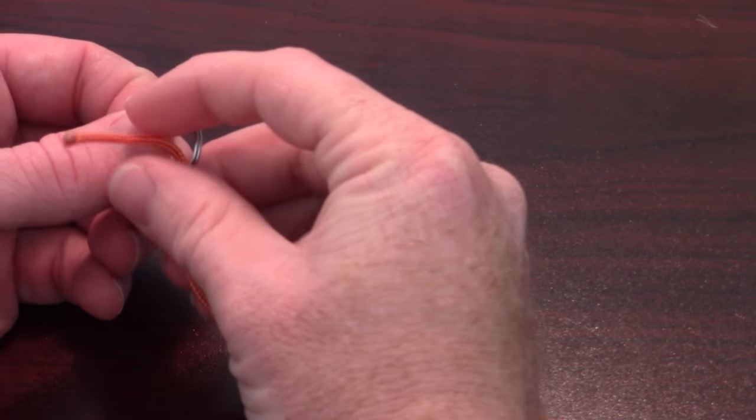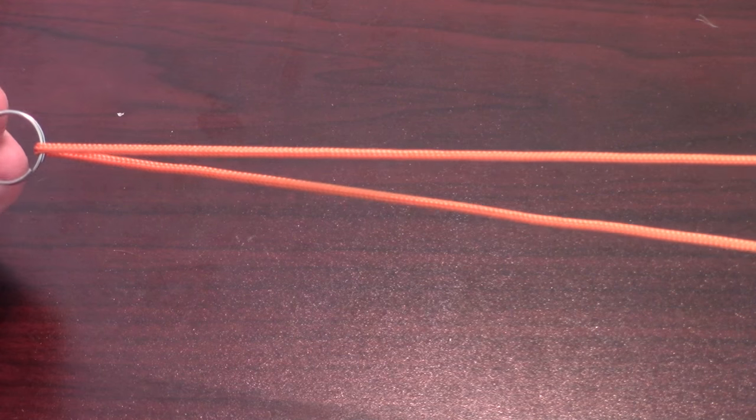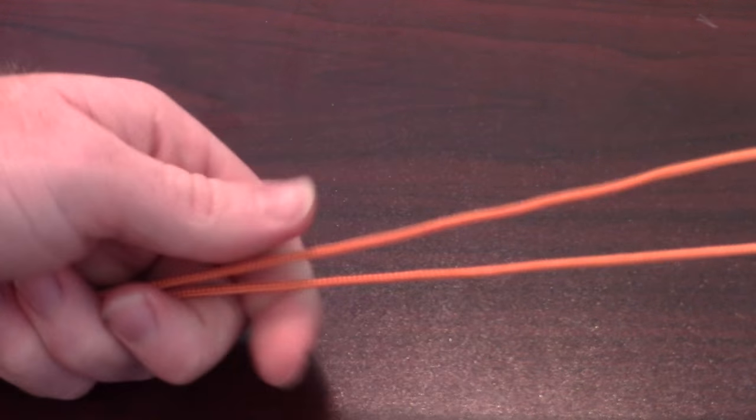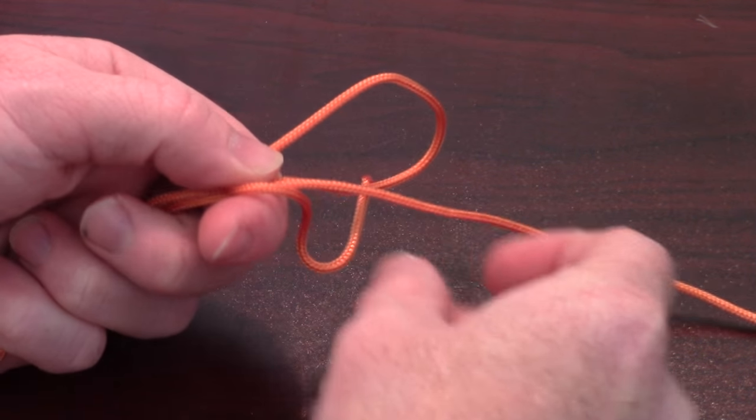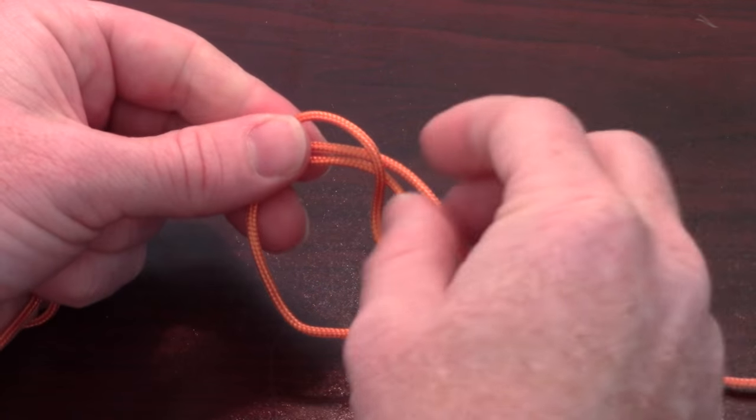So let's look at this once again more closely. Put the tag end through the hook eye. Make a loop and start wrapping the tag end up and around both lines 4-5 wraps.